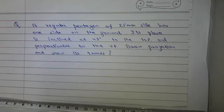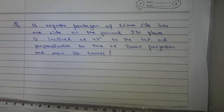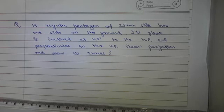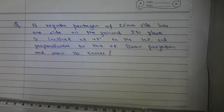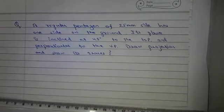Hello guys, this is the second lecture on projection of plane in which we will learn about pentagon. A regular pentagon of side 25 mm has one side on the ground. Its plane is inclined at 45 degrees to the HP and perpendicular to the VP. Draw the projection and show its traces.